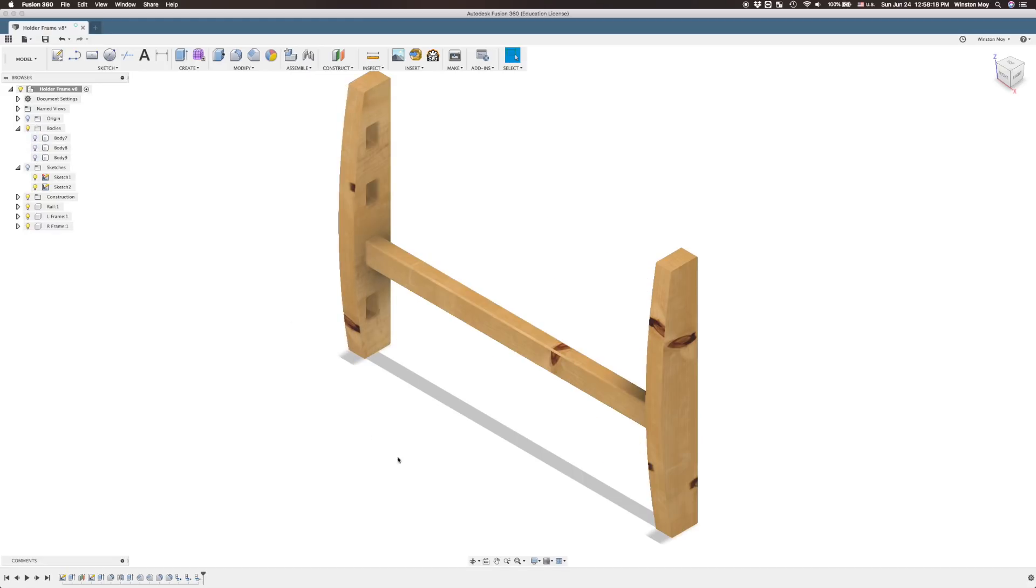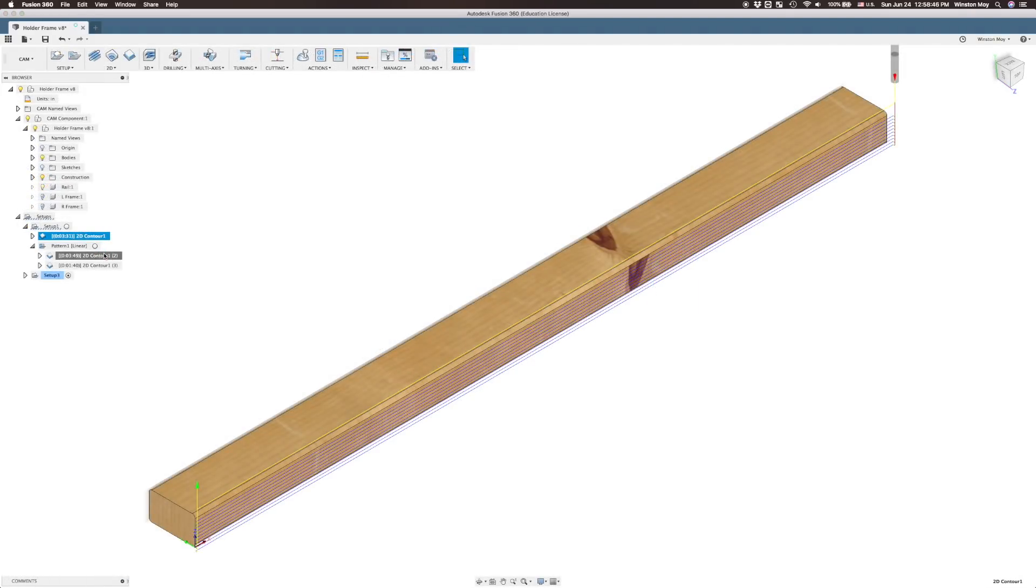I prototyped everything out in Fusion 360 and generated some toolpaths. The slats are easy enough to do. A rough 2D contour with 8 thou stock to leave, followed by a finishing pass. But because you can line these up right next to each other when cutting, you can save some time by not re-cutting the area between slats.